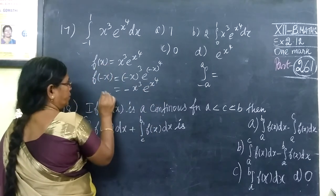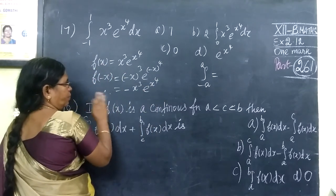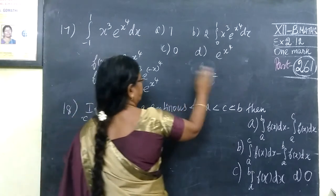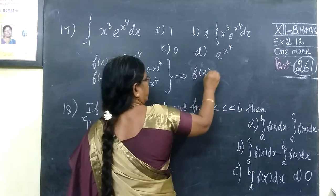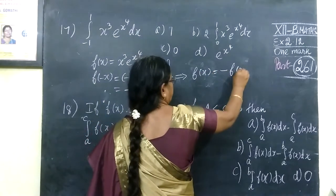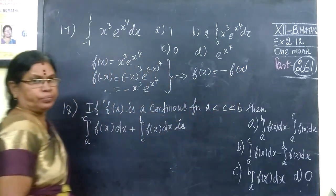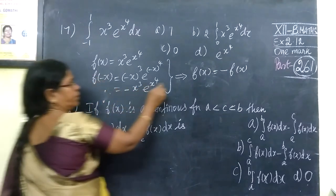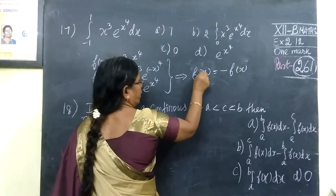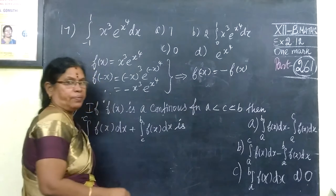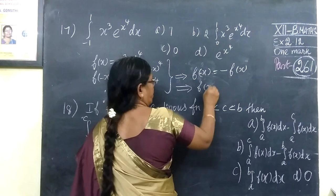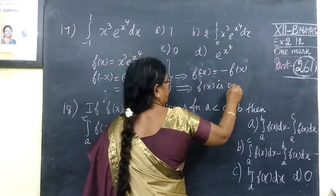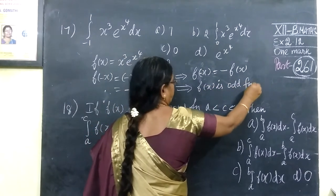So f of x is an odd function. f implies, so this implies f of minus x equal to minus f of x. So with this that means f of x is odd function.